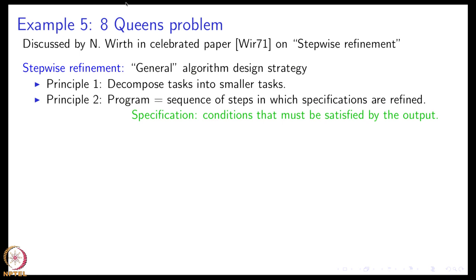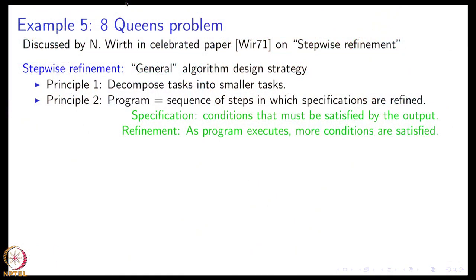Initially I might have said this is my output but it does not satisfy all conditions. So I look at what conditions I need to satisfy and I try to modify the output or the variable which I am going to output and make that variable satisfy more and more conditions. And the moment I satisfy all the conditions, I can print out the answer. So I can think of algorithm design as I have a big task and I break it up into small tasks, or I can think of my big task as satisfying a sequence of constraints and I am just going to get my program to satisfy more and more constraints. So refinement means as program executes more conditions are satisfied.